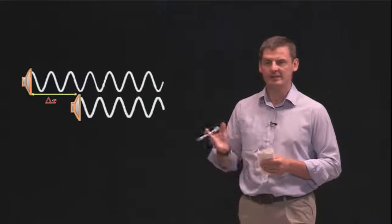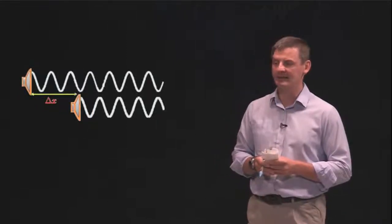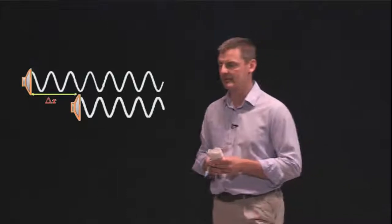So another way that we can use the light board is to annotate on top of images, such as this one here. This is a schematic of sound waves coming out of two loudspeakers.